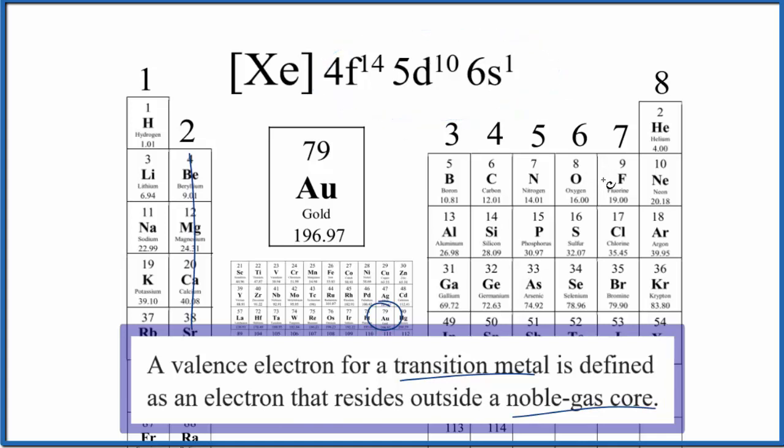In reality, gold will often form ions that are 1+, 2+, and 3+. So just saying that we have one valence electron because of this 6s1, it doesn't work because gold's a much bigger atom. So it might be safest to go with this definition here that valence electrons are outside the noble gas core and that you could call these valence electrons.